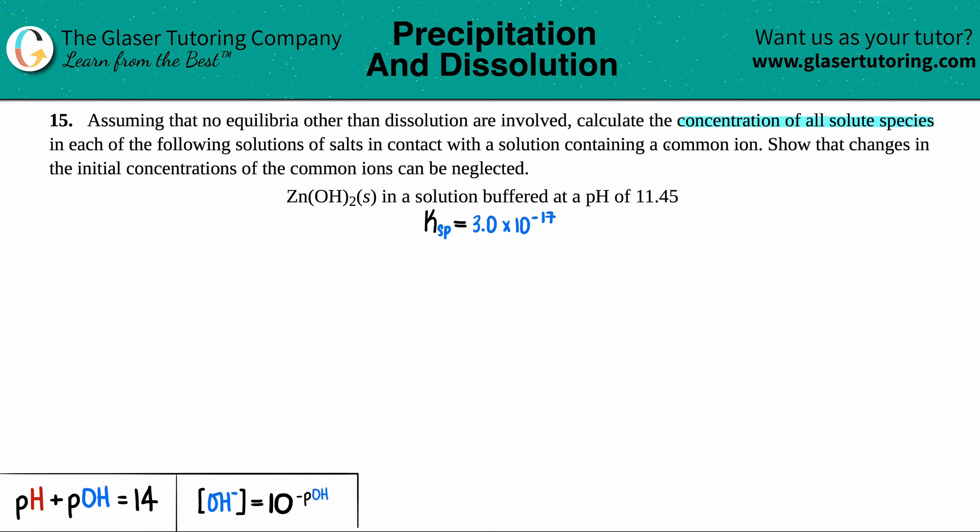Number 15, assuming that no equilibria other than dissolution are involved, calculate the concentration of all solute species in each of the following solutions of salts in contact with a solution containing a common ion, and then show that the changes in the initial concentrations of the common ion can be neglected. We have zinc hydroxide, Zn(OH)₂ solid, that's in a solution buffered at a pH of 11.45.